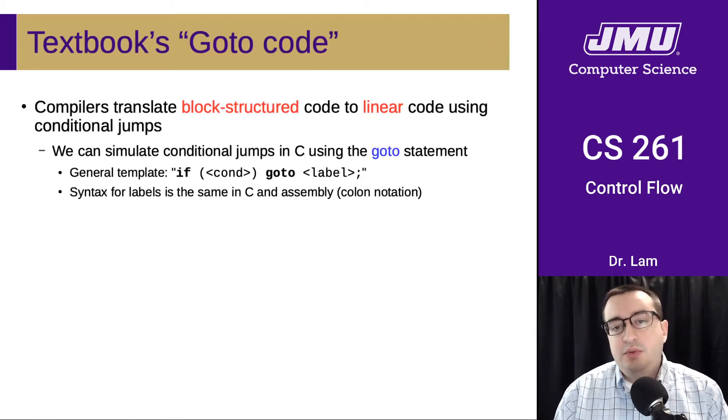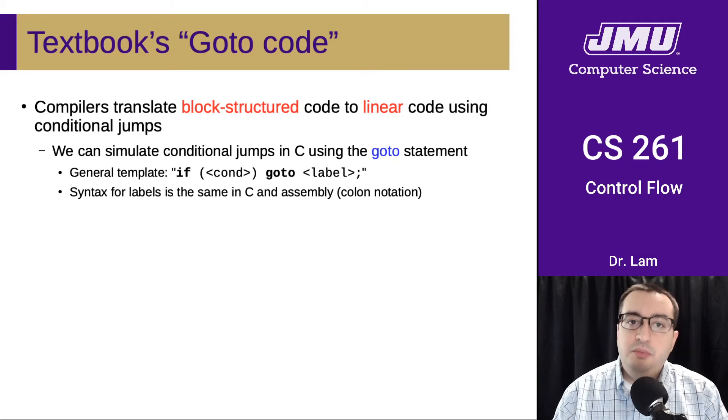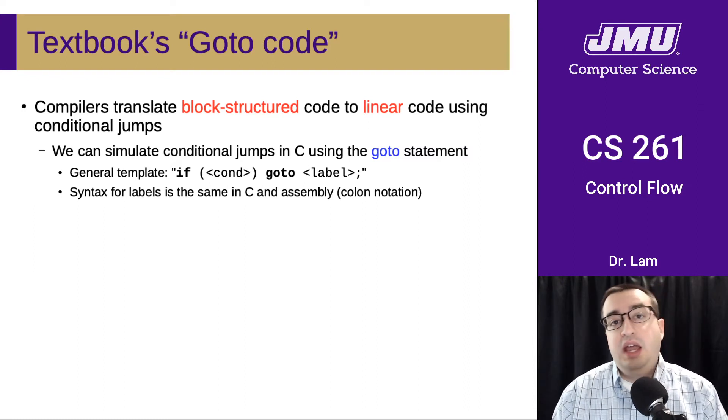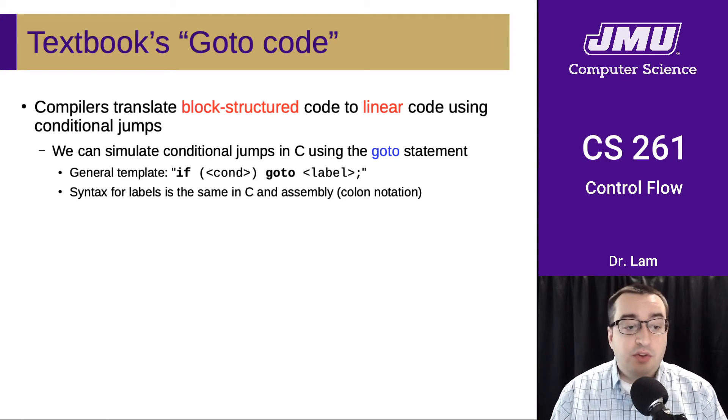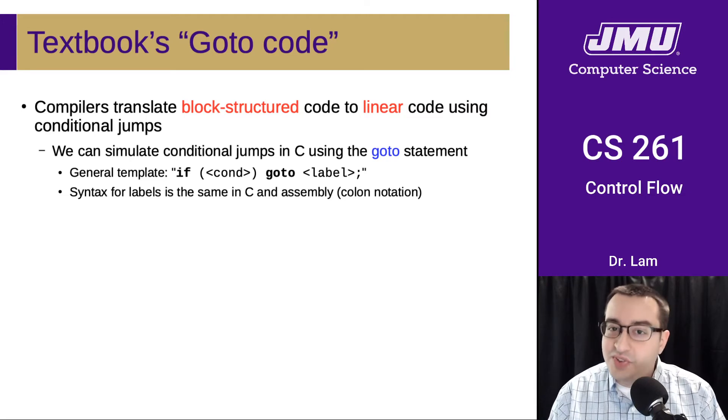In order to do these translations, it helps to go through an intermediate step. You'll get better at them the more you do, but there are also some general tips for doing this translation. In your textbook, they introduce this concept called goto code. The idea here is that we want an intermediate between the regular block-structured C code and the raw assembly code that we convert it to.